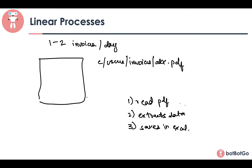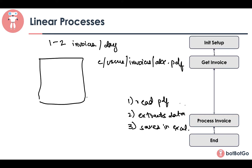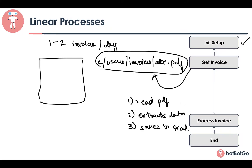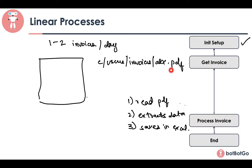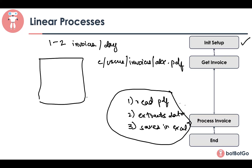If we translate these steps into a workflow, it might look something like this. The very first step is the initialization, where we check if a PDF reader exists on the system. If it does, we go to the Get Invoice step, where the bot asks the user for the location of the PDF file. Once you provide this path, the bot goes into the Process Invoice step and follows those three steps. Once the Excel is saved, you go to the End state, where a notification is sent to the user saying the invoice has been processed.